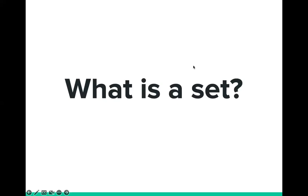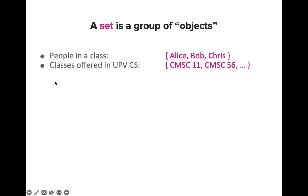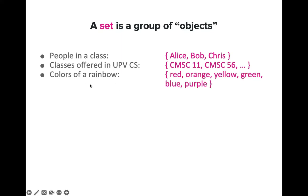Before everything else, let us discuss what a set is. From the word itself, a set means a group of objects. An example may be a set of people in a class, and the people may include Alice, Bob, or Chris. Another example is the classes offered in UPV — this includes some subjects like Komsai 11 or Komsai 56. We also have a set of colors of a rainbow, which includes the ROYGB colors. We also have a set of states of matter: solid, liquid, gas, and plasma.